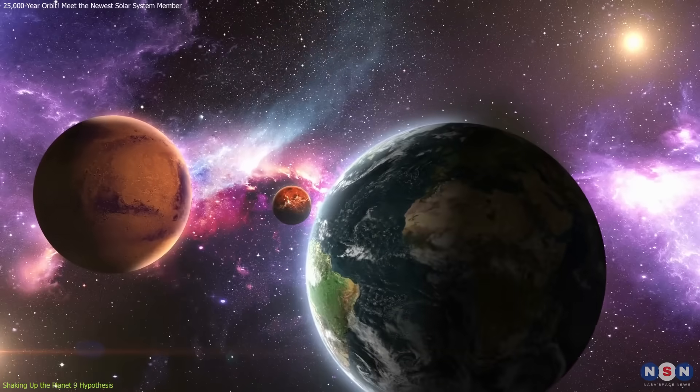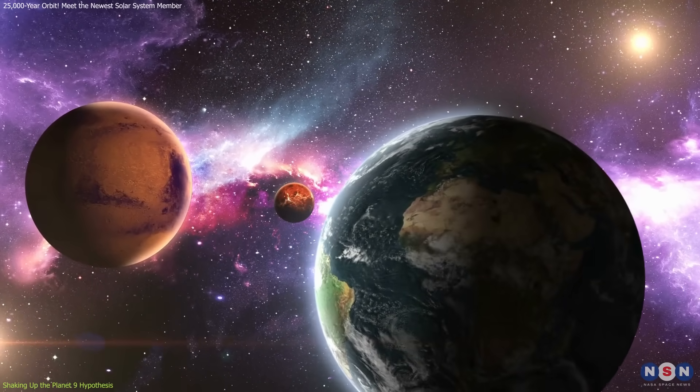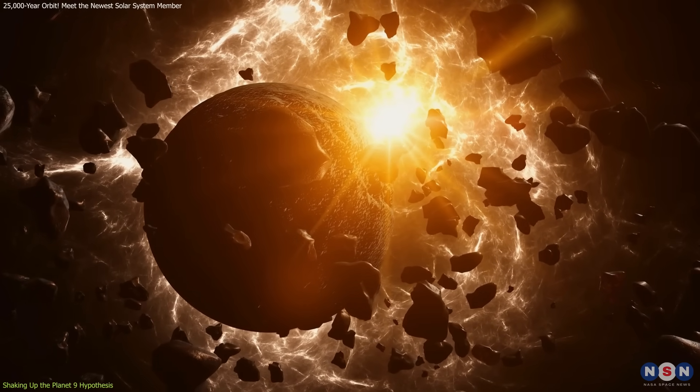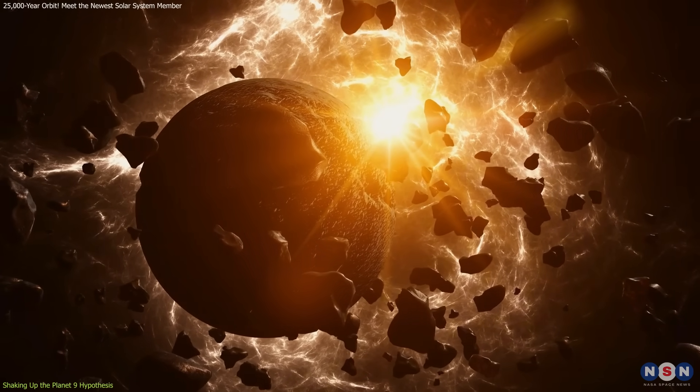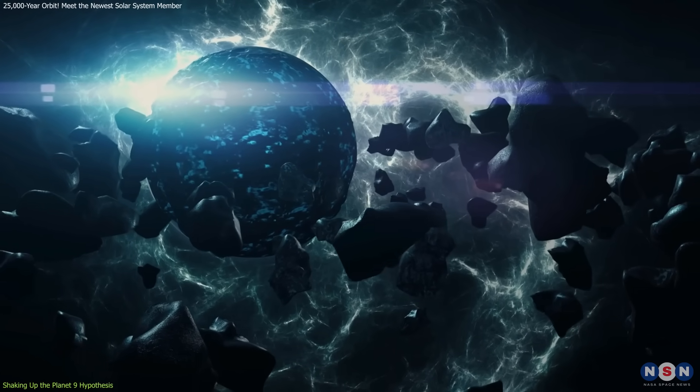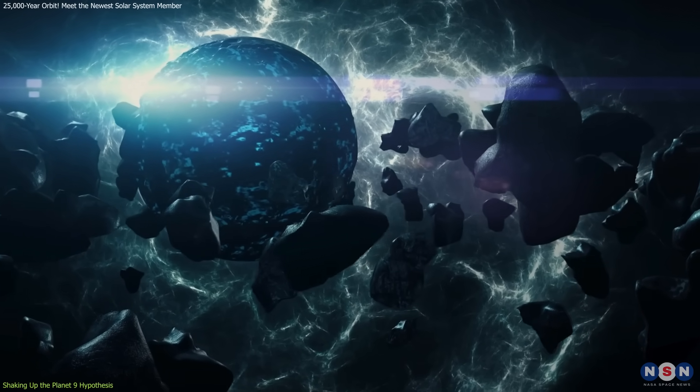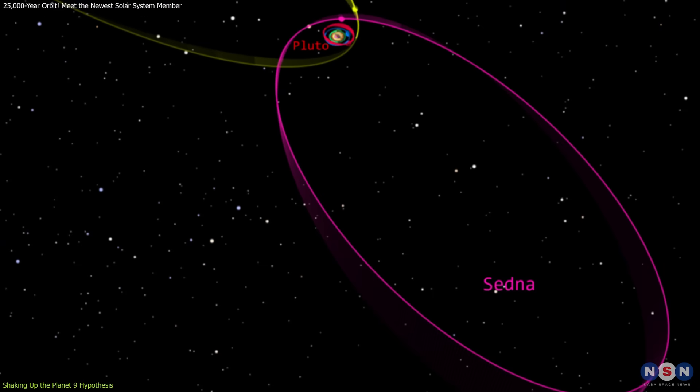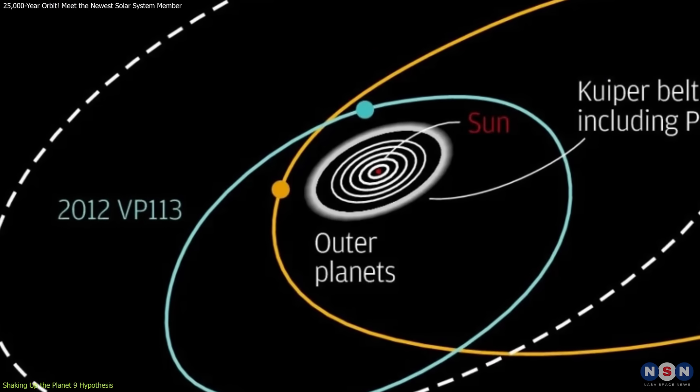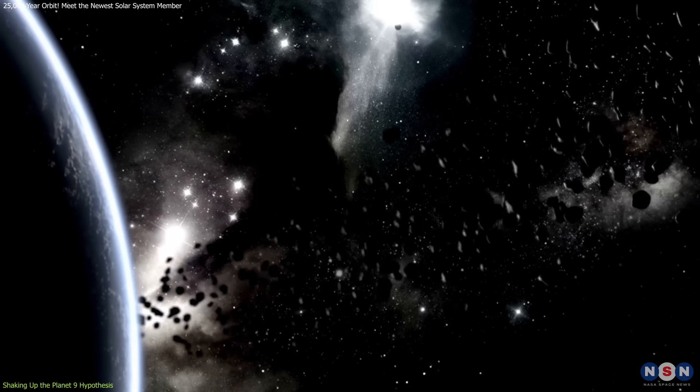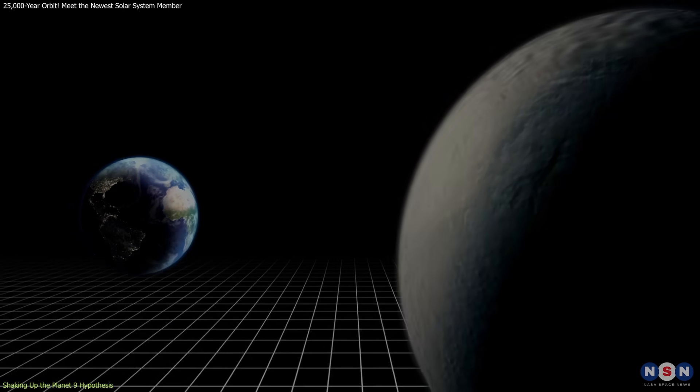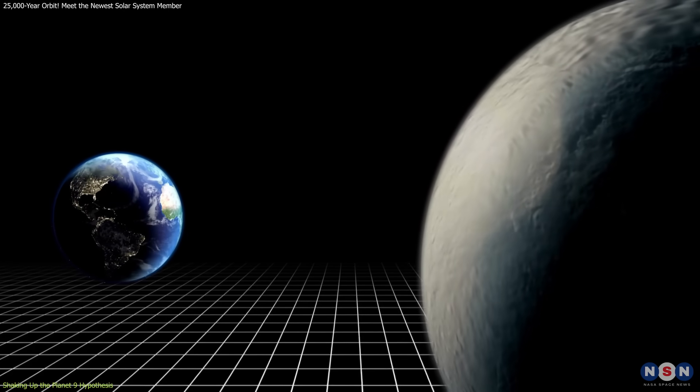One of the most debated ideas in modern planetary science is the existence of Planet 9, a theoretical massive planet orbiting far beyond Neptune. This hypothesis was introduced to explain the oddly clustered orbits of several extreme TNOs, such as Sedna and 2012 VP113. Their orbits appear to be aligned in a way that suggests gravitational influence from an unseen giant, possibly ten times the mass of Earth.